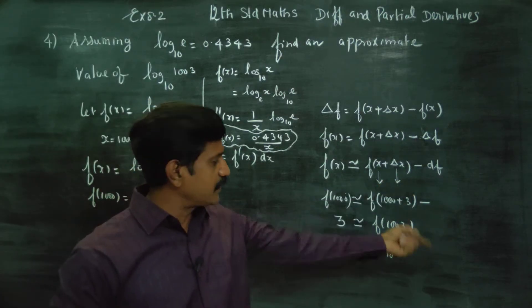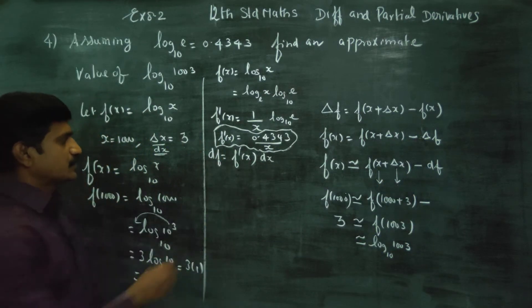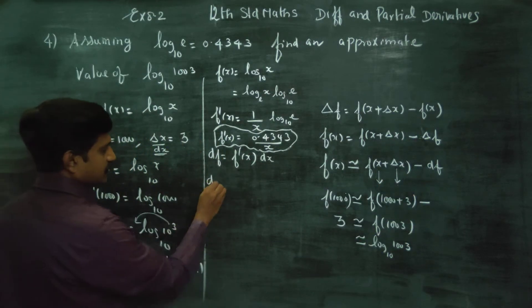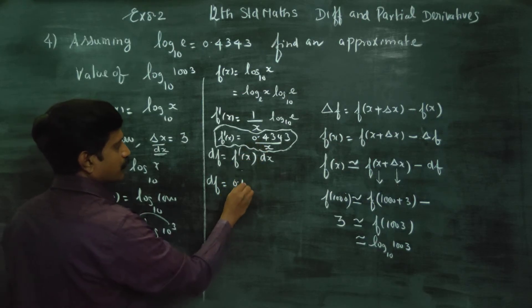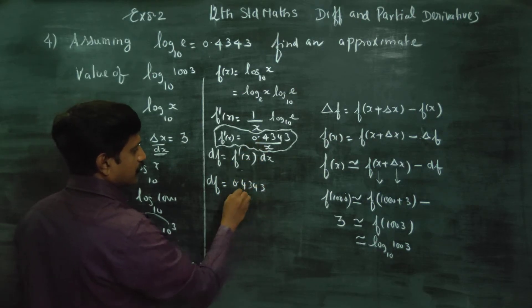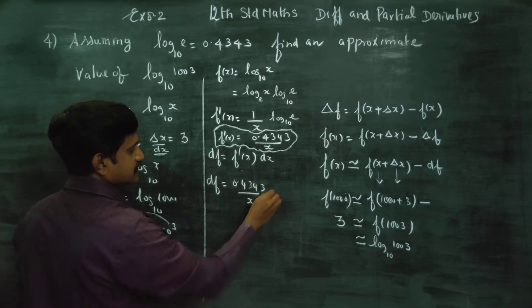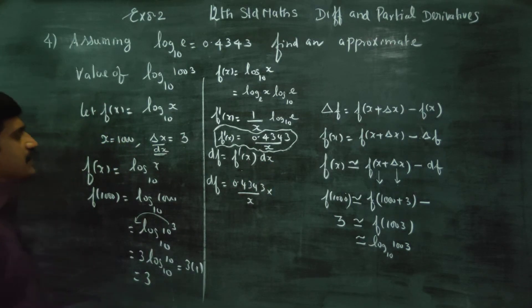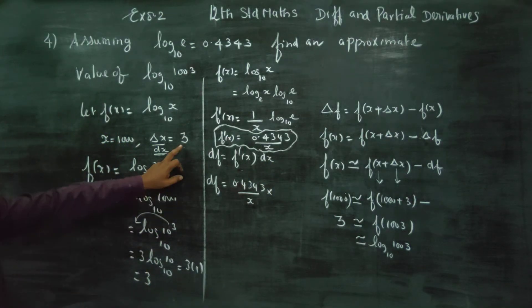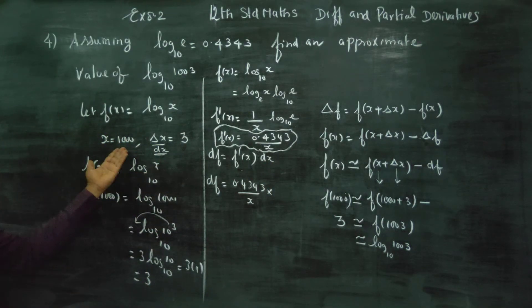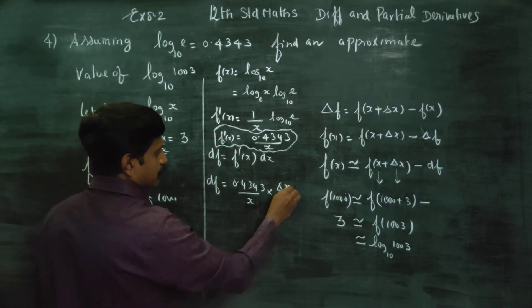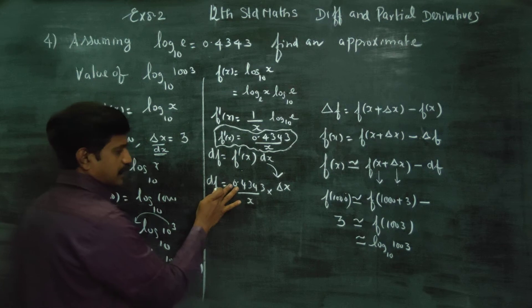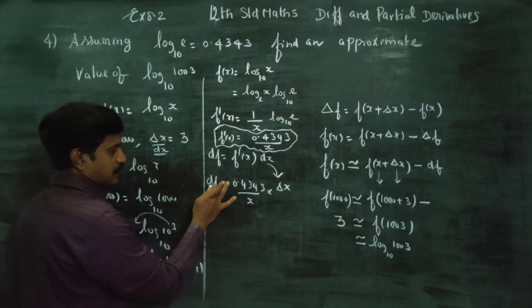df is equal to 0.4343 divided by x into dx. The dx value is equal to 3. You have to substitute the values. x value is 1000 and delta x is 3.